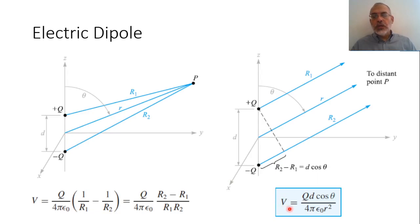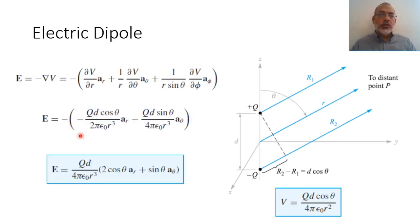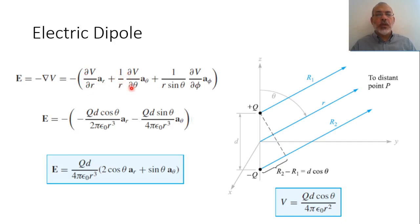If we have the electric potential, we can obtain the electric field, since the electric field is minus the gradient of the electric potential. The problem is presented in spherical coordinates because we are talking about r and theta. So the electric field is minus grad V, which is: minus partial V by partial r in the r-direction, plus (1/r) partial V by partial theta in the theta-direction, plus (1/r·sinθ) partial V by partial phi in the phi-direction.